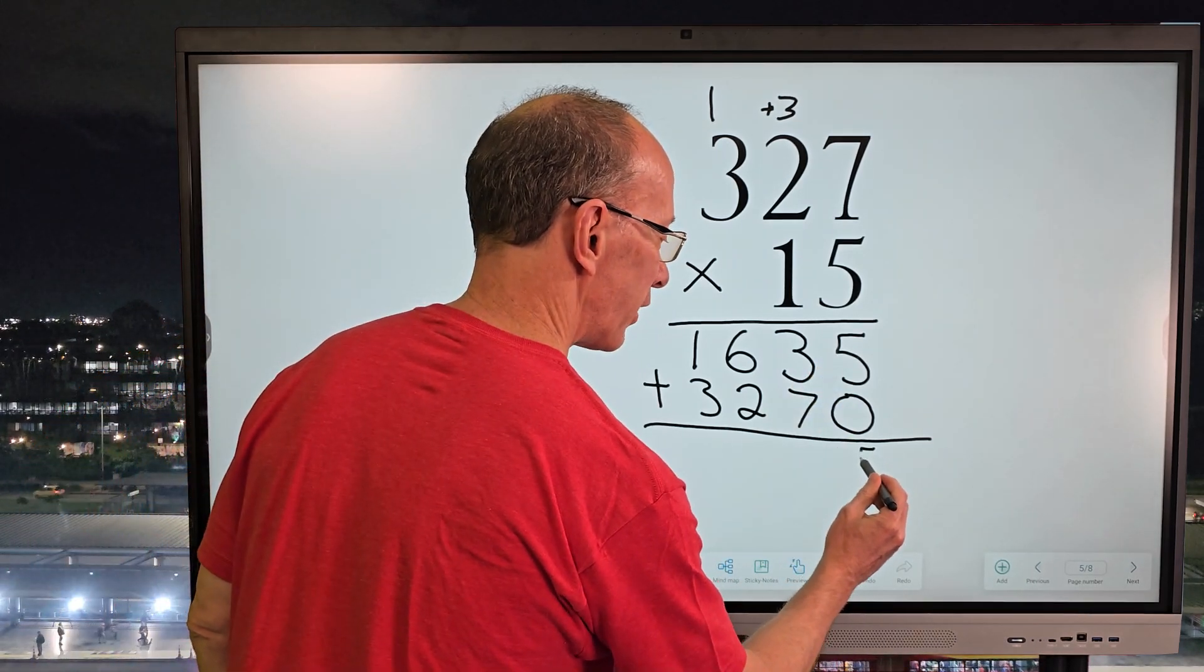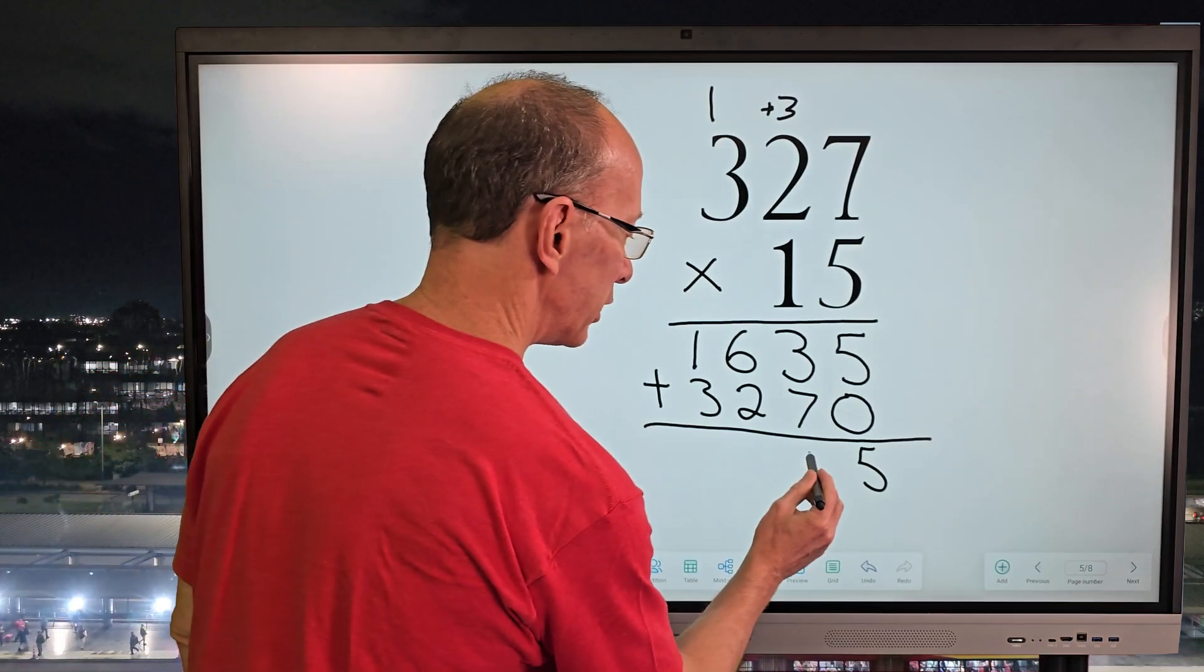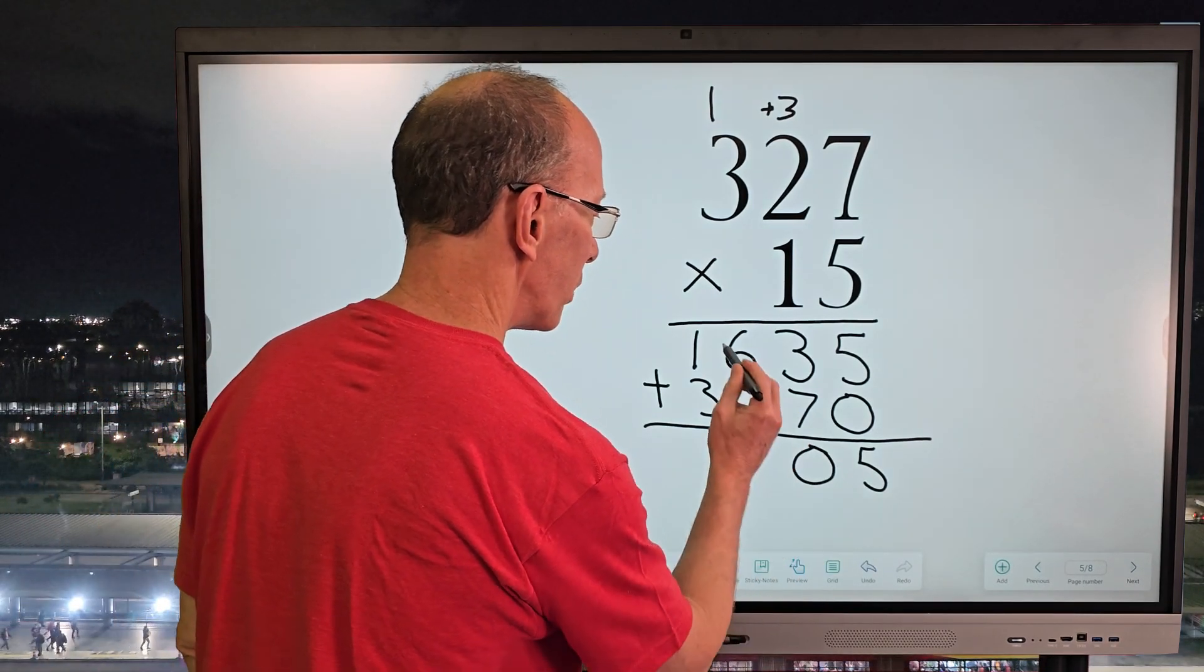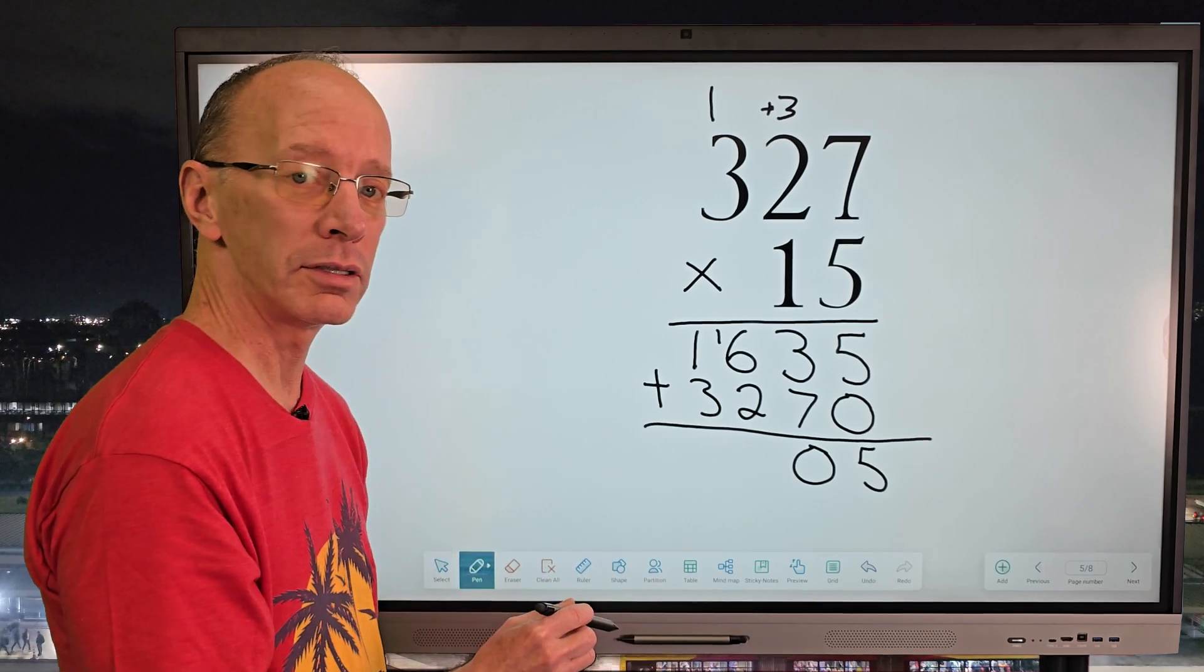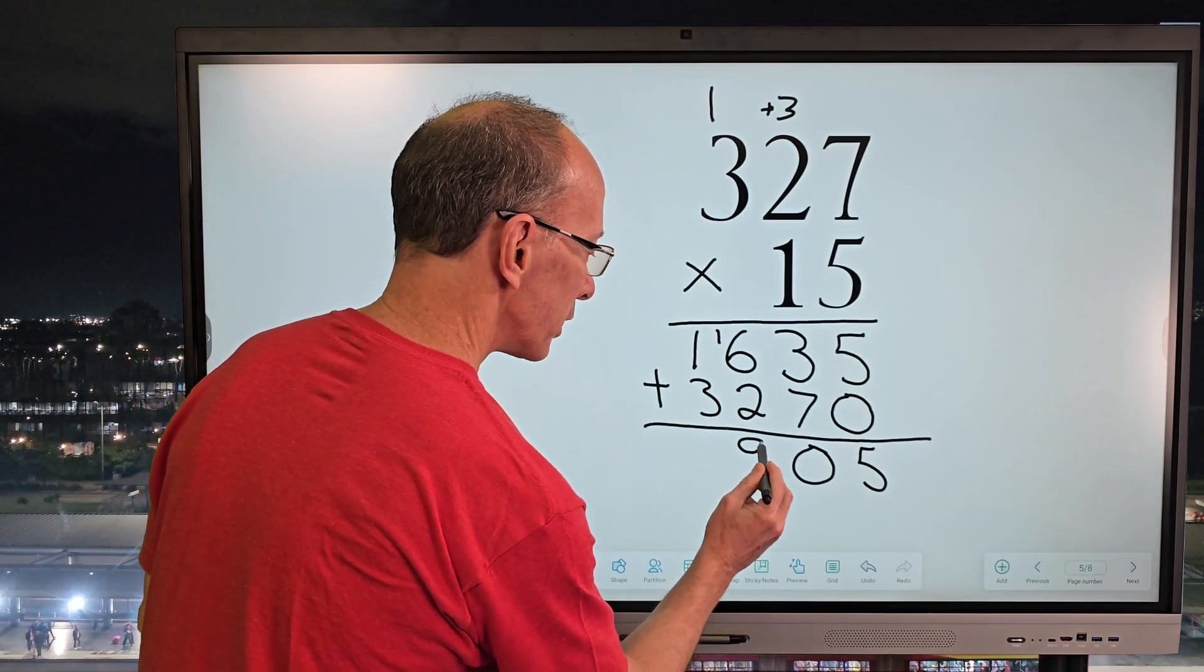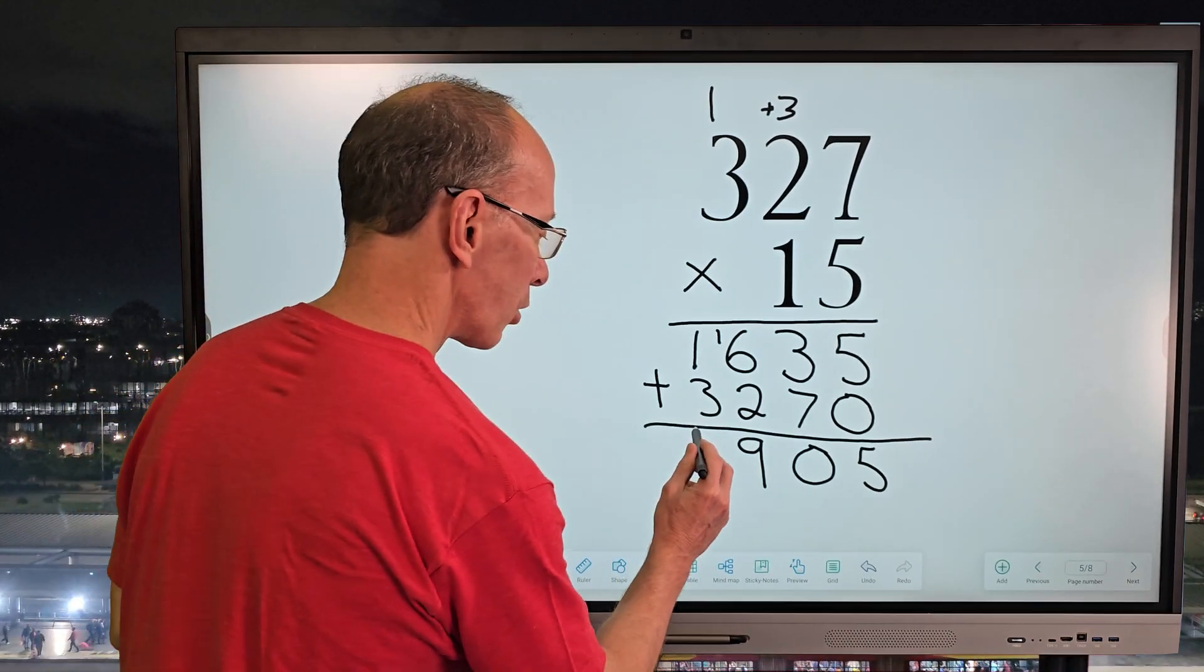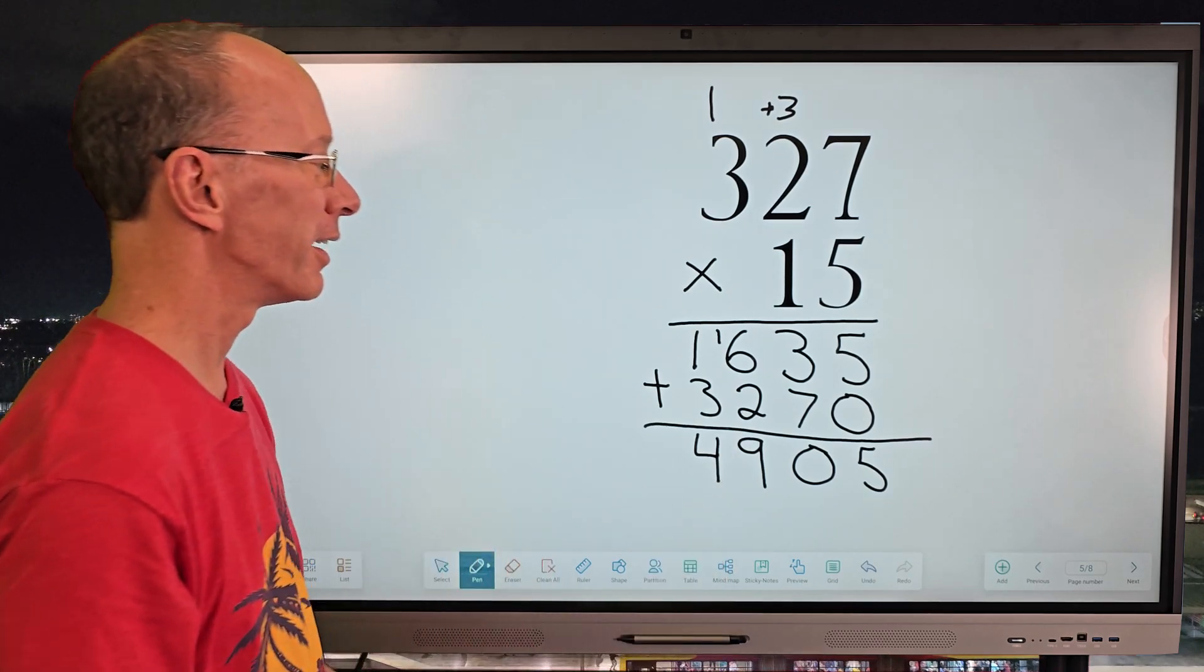So 5 plus 0 is 5. 7 plus 3, 7, 8, 9, 10. So I need to put the 0 here, carry the 1. So 6 and 2 is 8 plus the 1 is 9. Go ahead and put the 9 here. And then 3 plus 1 equals 4. Cuatro in Spanish. We got one more to do.